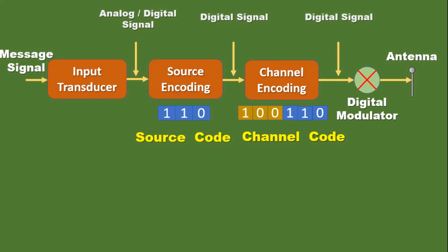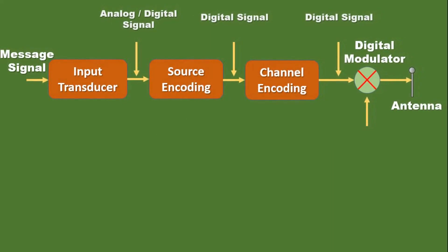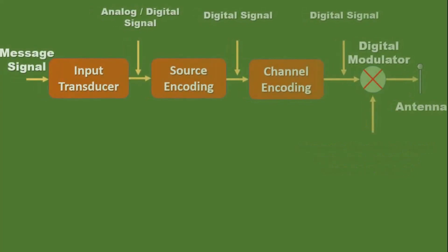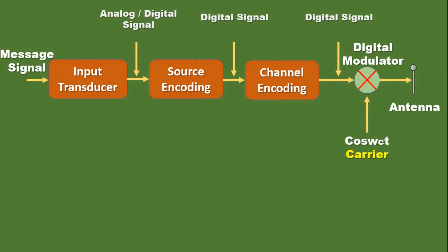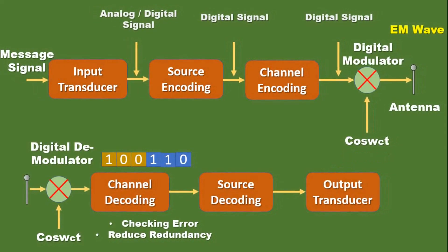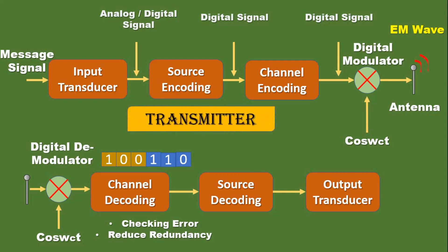The output of the channel encoder is a digital signal. The digital modulator has two inputs: the channel encoder's digital output, and a high frequency carrier signal cos(ωct) which we multiply with it. To send the signal over longer distances, we need to use modulators. Techniques used in digital modulation include Amplitude Shift Keying (ASK), Frequency Shift Keying (FSK), Phase Shift Keying (PSK), and Quadrature Phase Shift Keying (QPSK). We will discuss all of these in our upcoming videos.